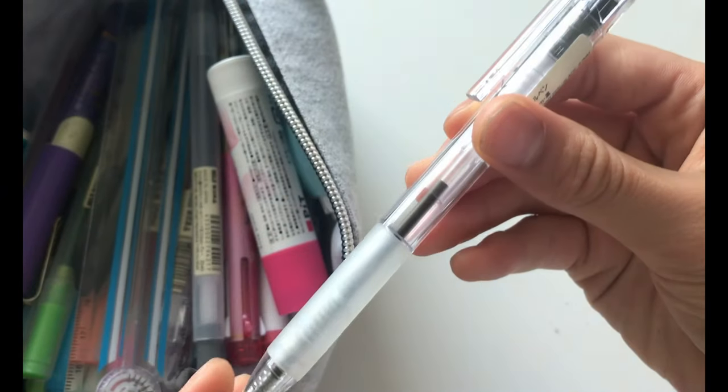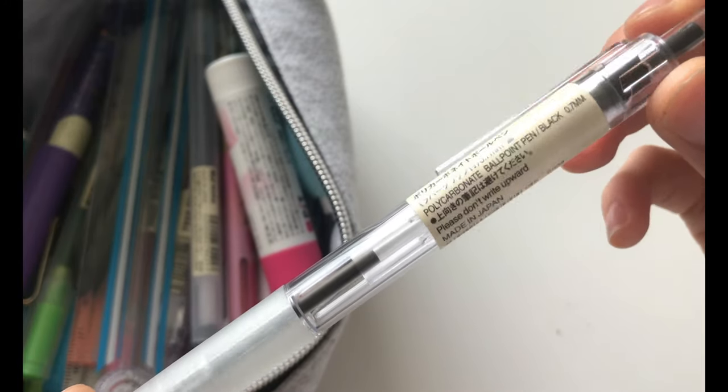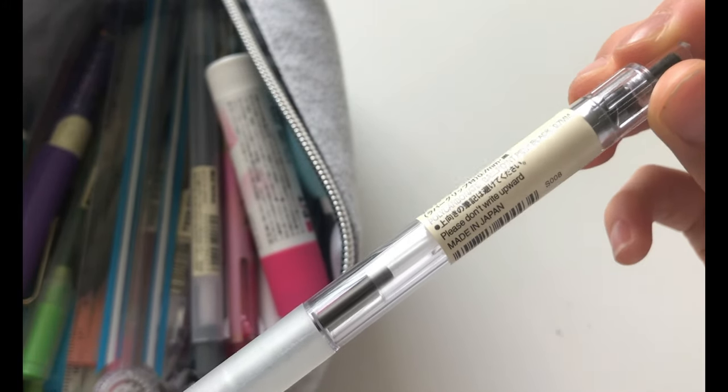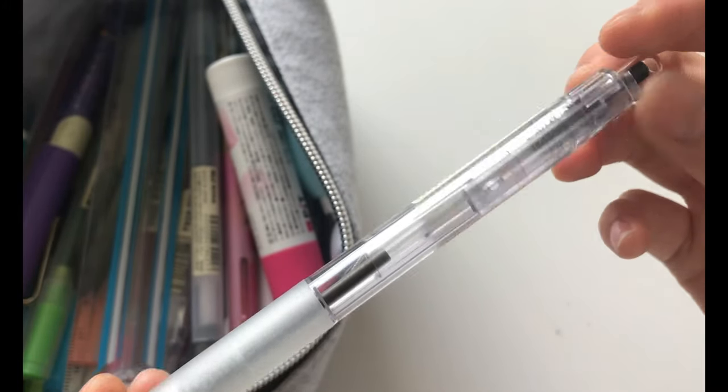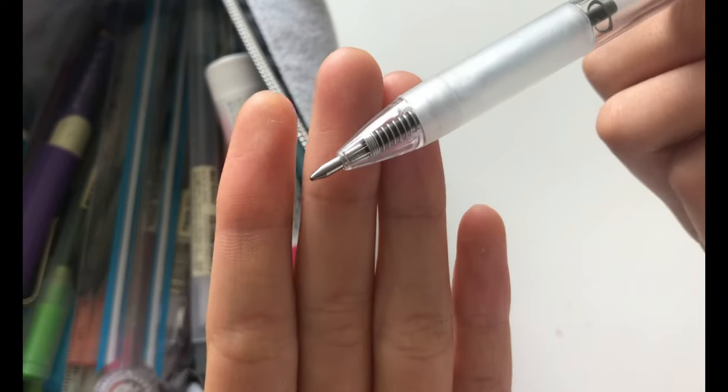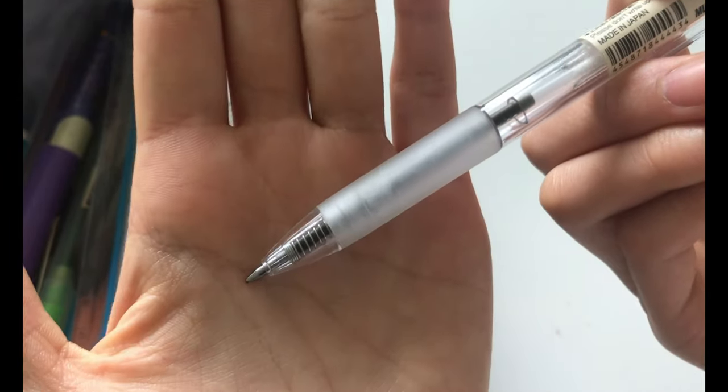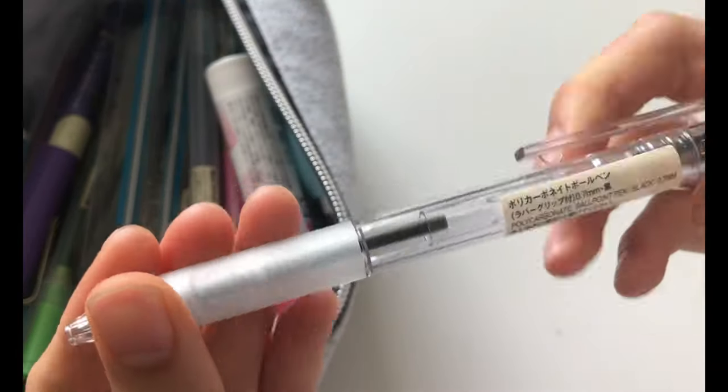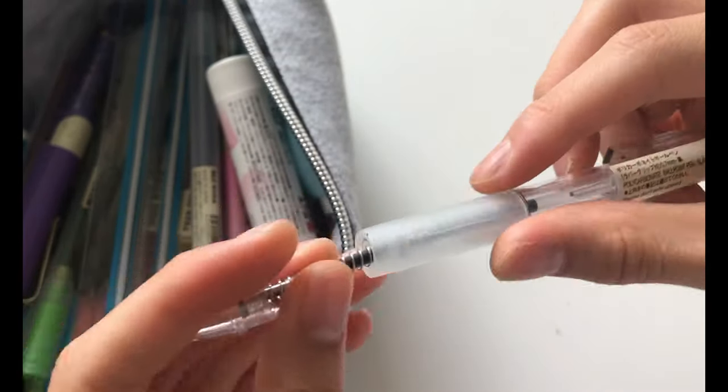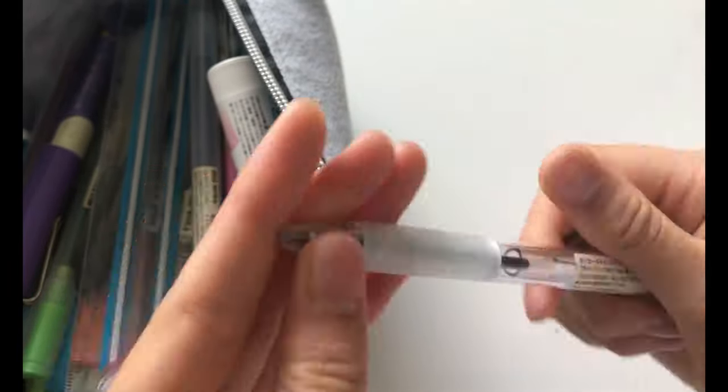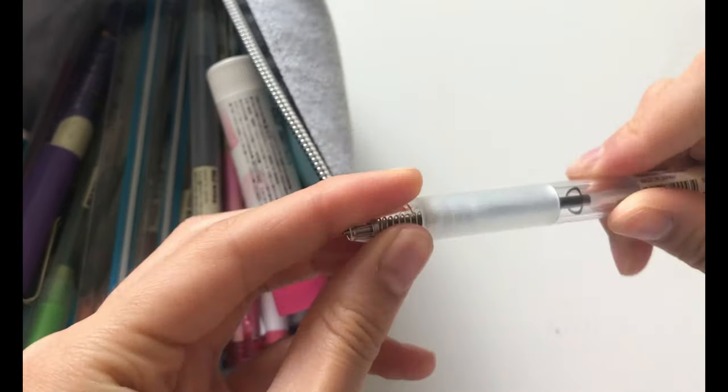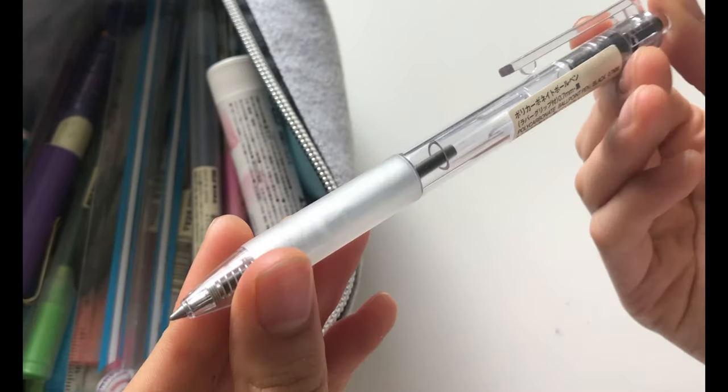The next item is the Black 0.7 Polycarbonate Ballpoint Pen by Muji. So this is definitely the best ballpoint pen I've ever used, but I don't really use it just because I don't use ballpoint pens. I only use this when I'm writing on loose sheet paper, but I would definitely recommend this if you like ballpoint pens.